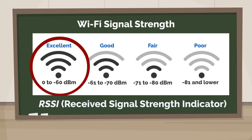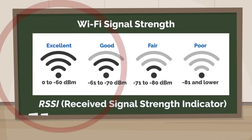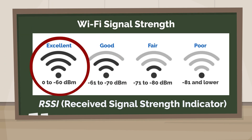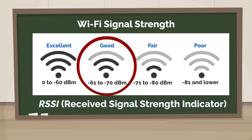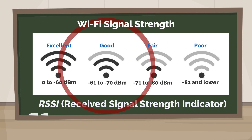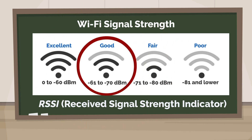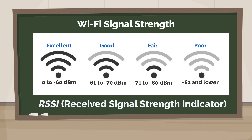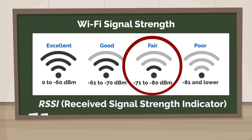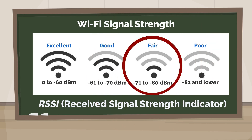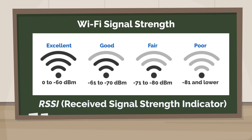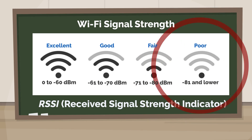Signal is excellent if the RSSI value is between 0 to negative 60 dBm. Signal is good if the RSSI value is between negative 61 to negative 70 dBm. Signal is fair if the RSSI value is between negative 71 to negative 80 dBm. Signal is weak if the RSSI value is negative 80 dBm and below.